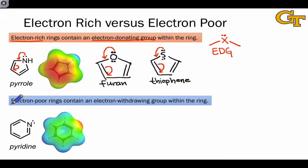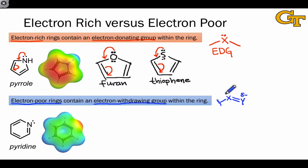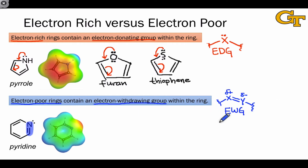Electron-poor rings, such as pyridine, contain an electron-withdrawing group within their structure. Recall that we previously identified the general structure of an electron-withdrawing group as an X=Y double or triple bond where Y is more electronegative than X. Within a ring structure, Y would also have to be connected to something else. We find that structural pattern within pyridine in the form of a carbon-nitrogen double bond, and this is a very common specific example of the general electron-withdrawing group pattern found within aromatic heterocycles.